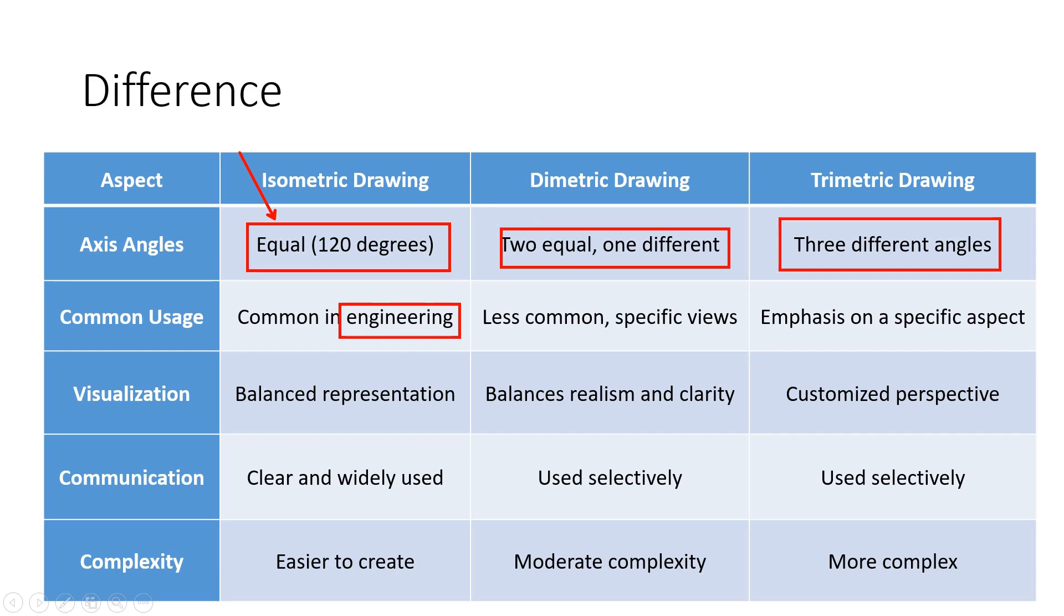Dimetric drawing introduces two equal axis angles and one different angle, providing a compromise between realism and clarity. Although less common, dimetric drawings are employed when specific views are desired.